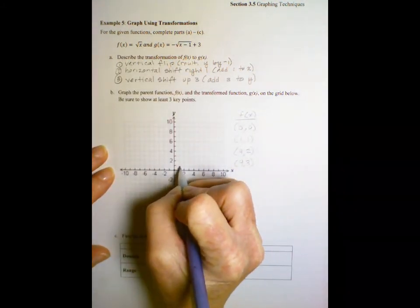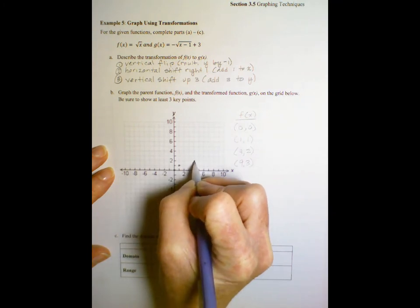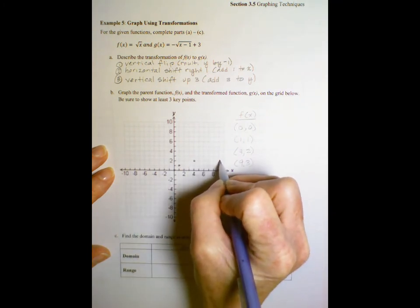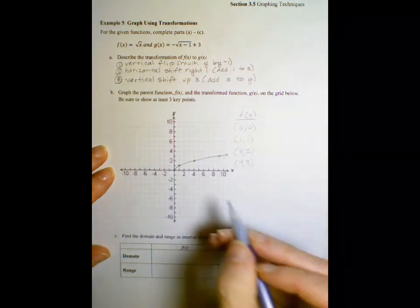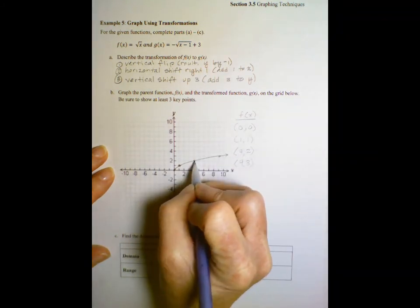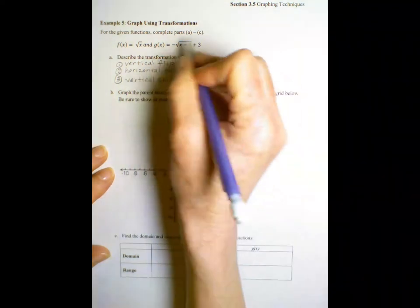So let's graph that. Zero, zero, one, one, four, two, nine, three.